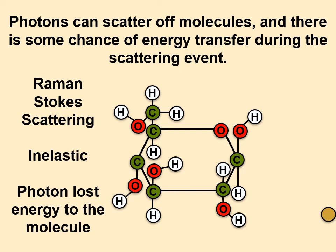But something else can happen every now and then with rarity: during the scattering process there can be an energy transfer, even though the photon is not the right energy to match a quantized energy state of the molecule. In that case energy is lost from the photon — this is called Stokes scattering, and this is all part of Raman.